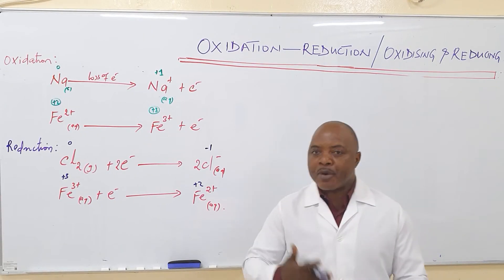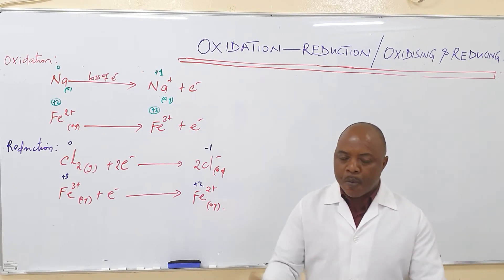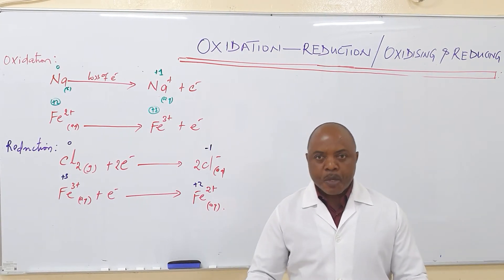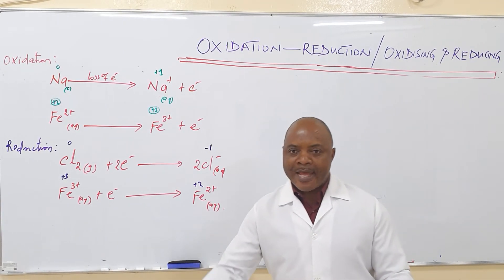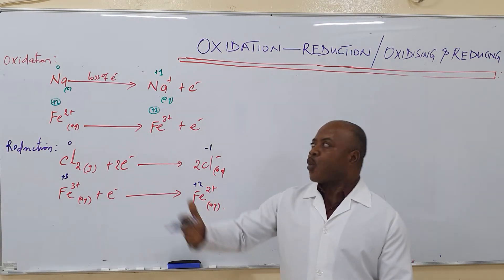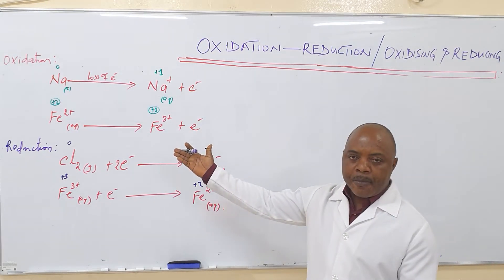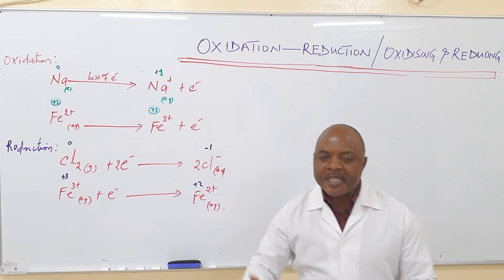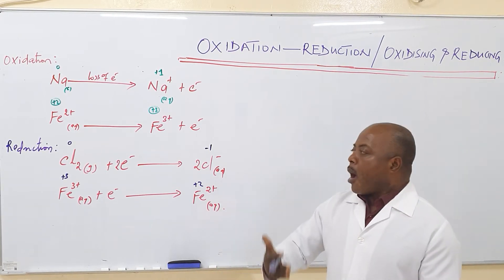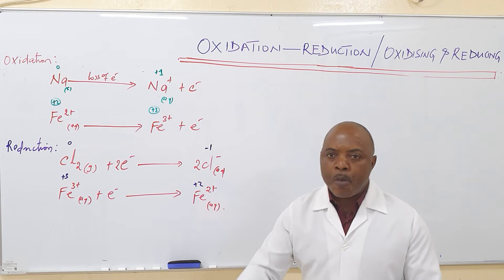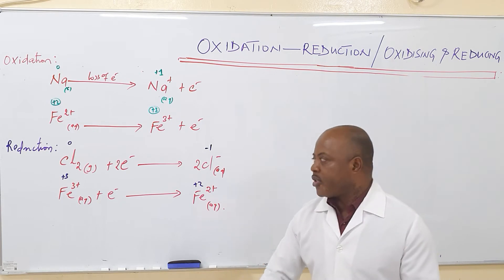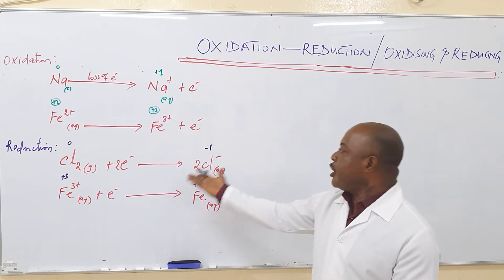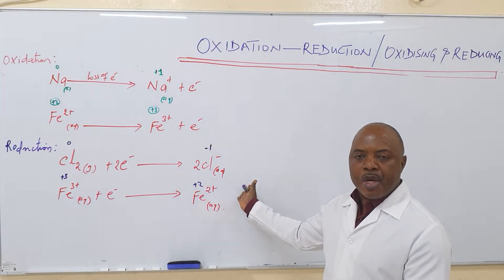Oxidation is a process in which an atom or group of atoms will lose electrons. When they lose the electrons, it leads to an increase in the oxidation number. Meanwhile, reduction is a process in which an atom or group of atoms or ions will gain electrons, leading to a decrease in the oxidation number.